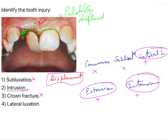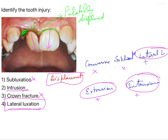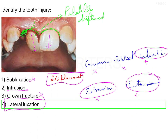Intrusion and lateral luxation both show displacement. Looking at the complete length of the tooth here, it doesn't look quite intruded. Intrusion means displacement of the tooth within the socket along the same axis — that is not the case here. The axis has changed and the tooth has been displaced laterally, which is why it is called lateral luxation. The answer to this question is option four: lateral luxation.